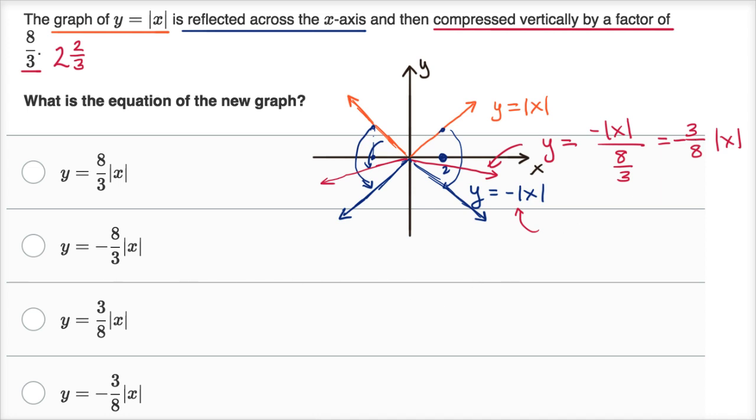And when we look at our choices, we see that it is that choice right over there. And I really want to stress this point because I think it can get a little bit confusing. The reason why I multiplied that by the reciprocal, is we're saying compressing vertically.